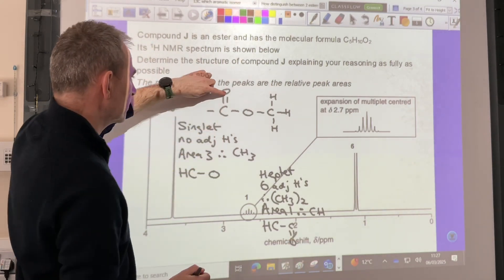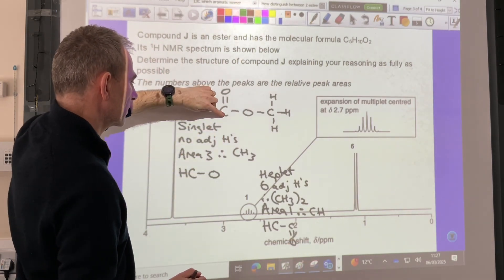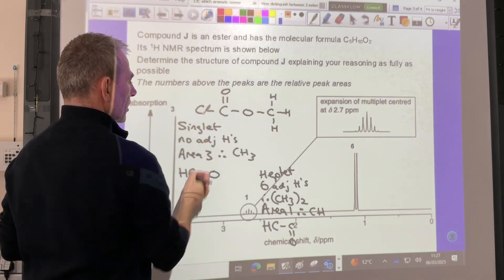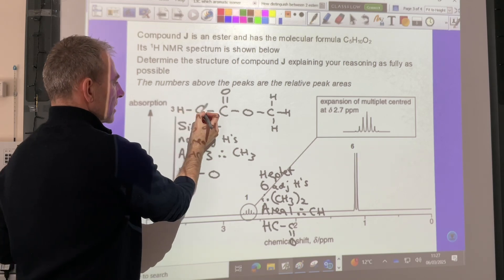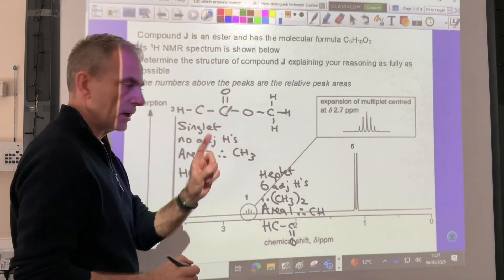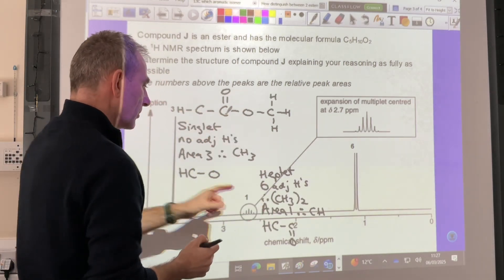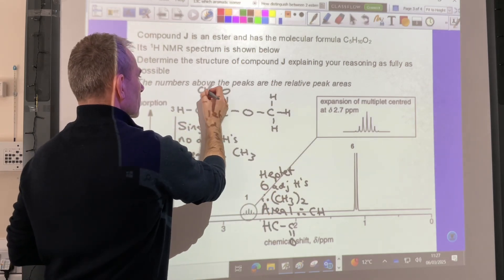So we're talking about protons on this side now. So we've effectively got a carbon with a hydrogen on, H to C to C double bond O, 1 hydrogen, area 1. But adjacent to them are these 2 CH3 groups.